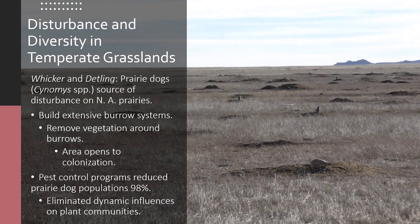Here is a different kind of disturbance: a biotic source. Prairie dogs disturb areas on North American prairies through extensive burrow systems. Around each hole there is a mound where they have eaten all the vegetation, allowing them to spot predators. By removing the vegetation, they open the area for colonization by new plants, and prairie dog towns have increased local plant diversity compared to the surrounding grassland.